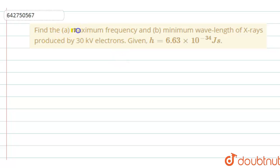The question is find the maximum frequency and minimum wavelength of X-rays produced by 30 kV electrons. Given the H value is there. So they are saying that the potential of the electrons V is given to be 30 or you can say it as 3 into 10 power 4 volts.